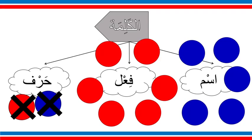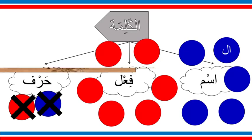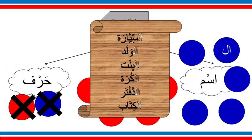The good news is you already know three of the signs of ism. The first sign is 'al-' — if any word accepts the definite article 'al-', it is a noun: as-sayyara, al-walad, al-bint, al-kura, al-daftar, al-kitab. If you can add 'al-' to a word, that word is ism.